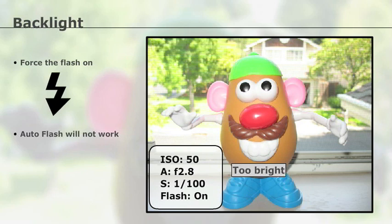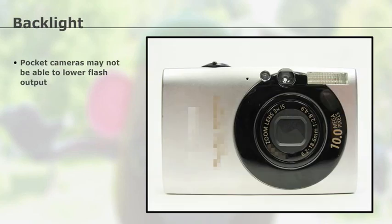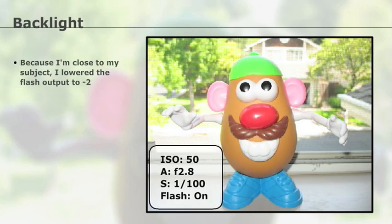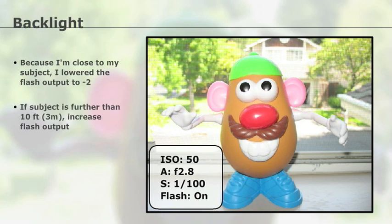However, in this case, I think the subject is too bright, making him look a little flat. The flash is too strong because I'm so close. Pocket cameras may not have the ability to lower the flash power, but most advanced point-and-shoot cameras and DSLRs can. So I'll lower the power of the flash. I can't tell you how much to lower or maybe increase in your situation because it really depends on the camera and distance from the subject.